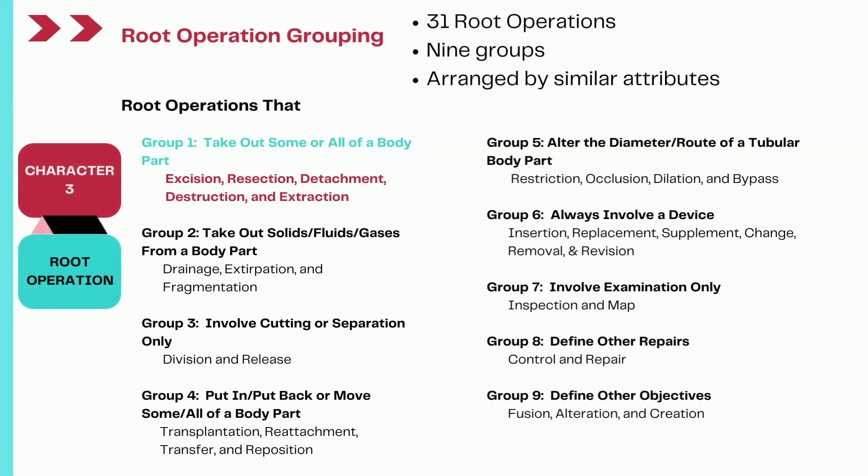There are a total of 31 root operations in the medical and surgical section, and these root operations are divided into nine groups based on similar attributes of surgical procedures.